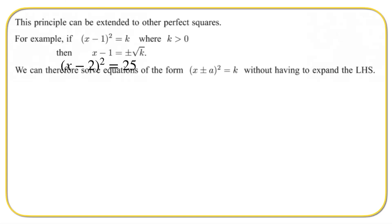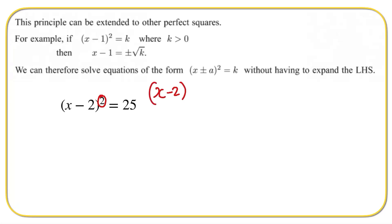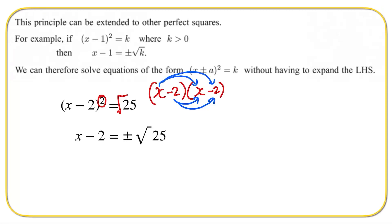Let's have a look at an example: x minus two all squared is equal to 25. We don't need to expand the left hand side. Instead, the opposite of squaring is to square root, so we square root the right hand side. We get x minus two is equal to plus or minus the square root of 25. The square root of 25 is five, so it's plus or minus five. Adding two to both sides, we end up getting x equal to two plus or minus five.